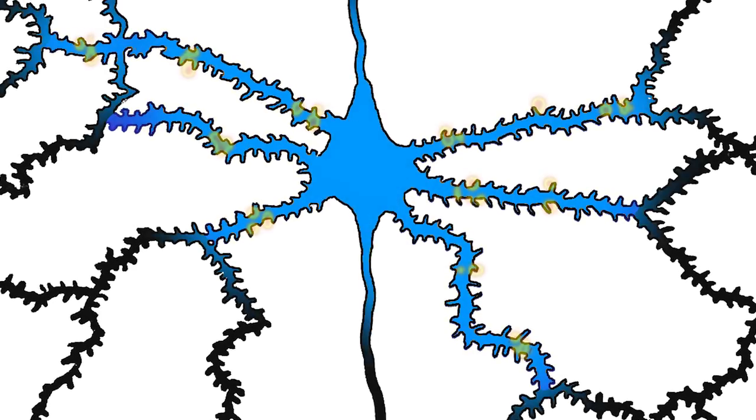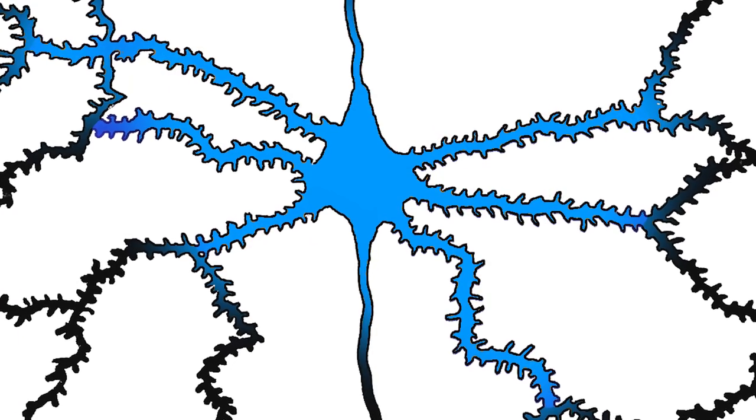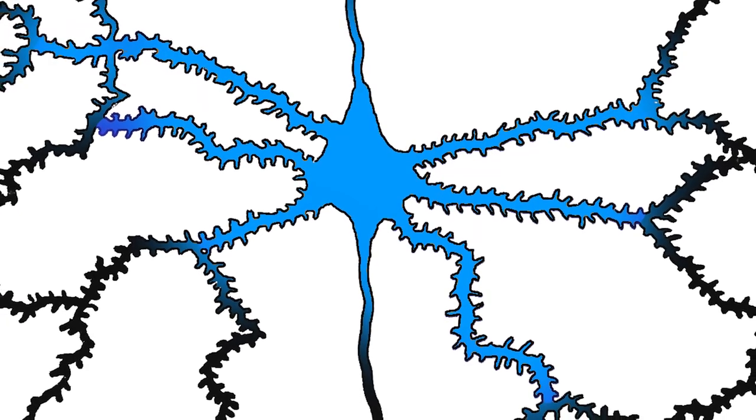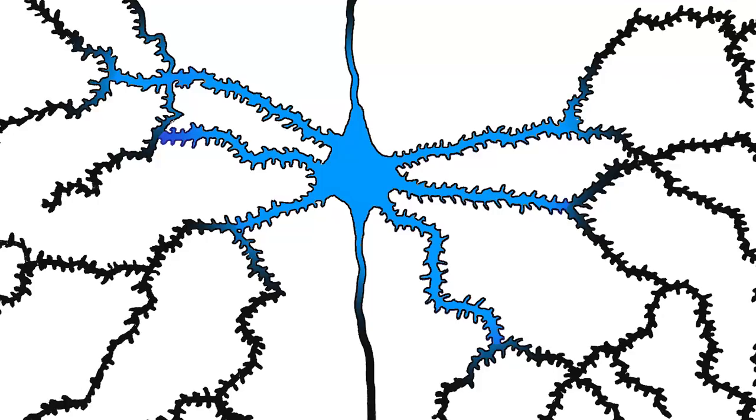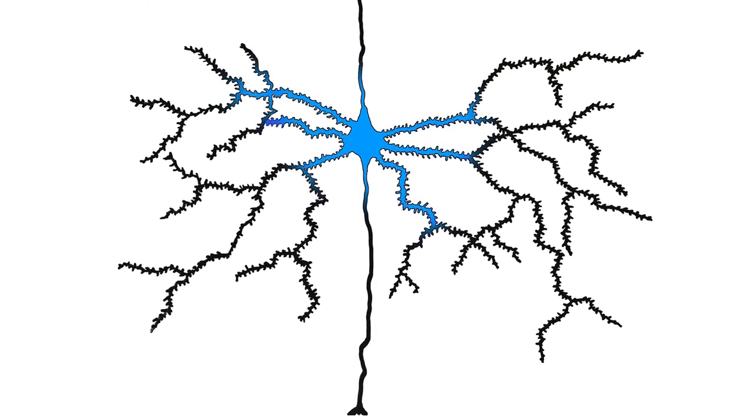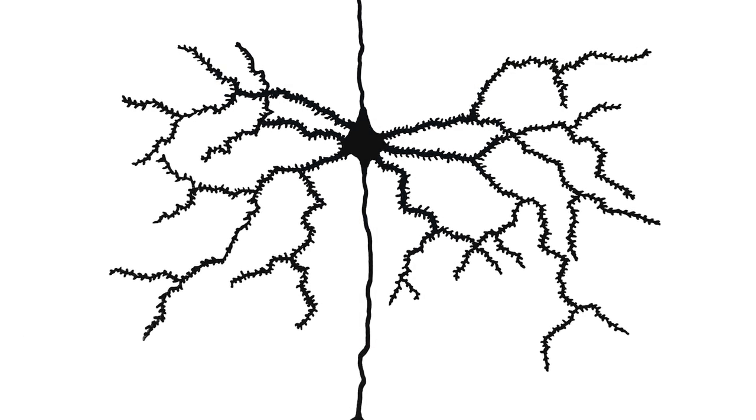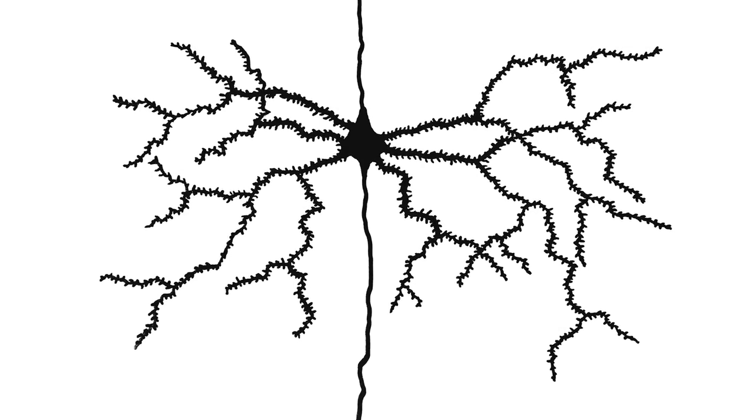But if enough proximal synapses fire within a short period, this can cause the voltage at the cell body to breach a threshold and cause a chain reaction called an action potential or spike. The cell has now fired and communicated this state to whatever it is connected to.